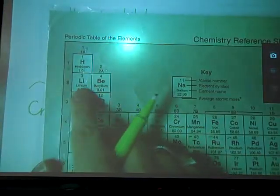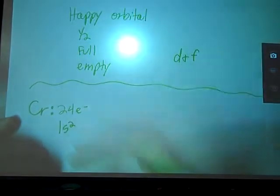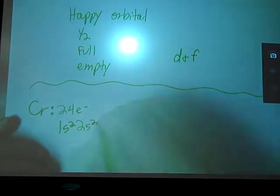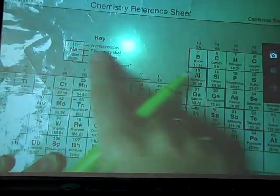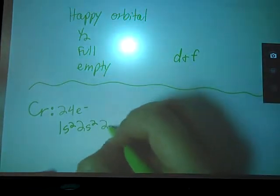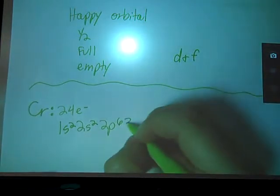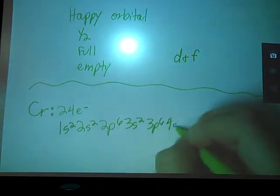2, 2s1, 2s2. Slide your finger all the way across. I'm still on row 2. This is the P block, so this is 2P. 2P6, ran out of real estate, wrap around to 3s2, 3p6, 4s2.